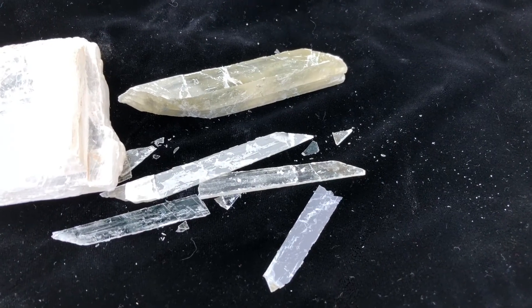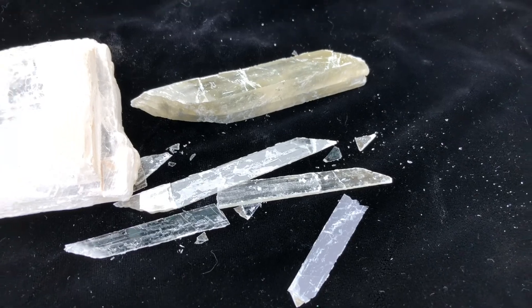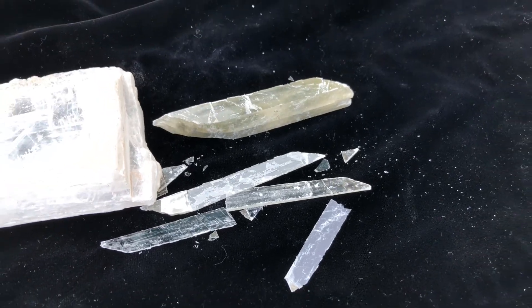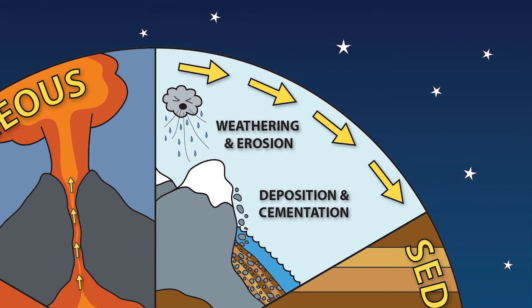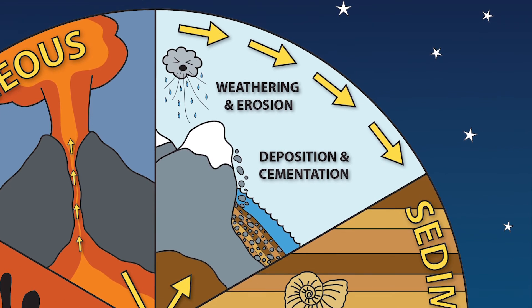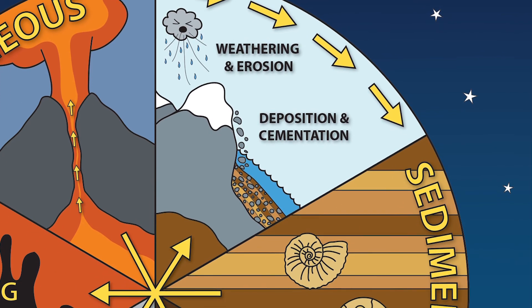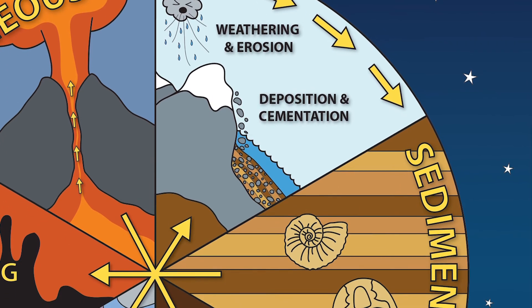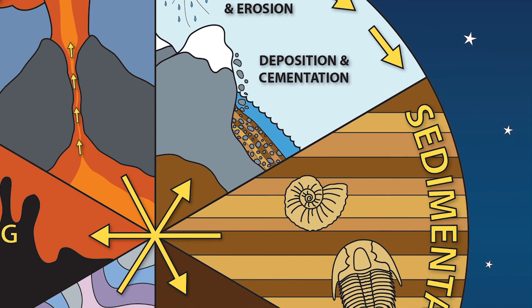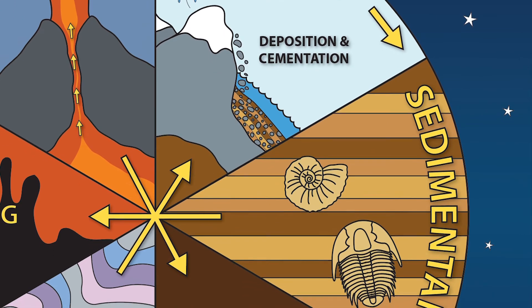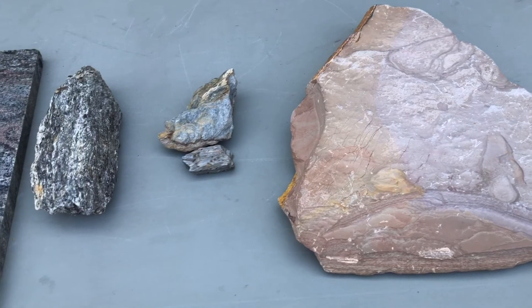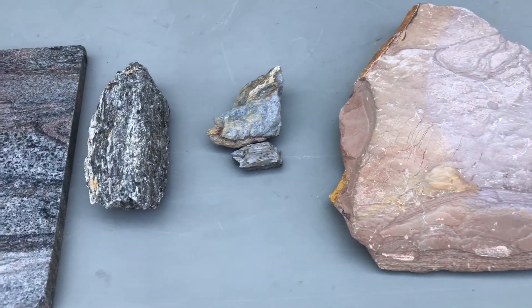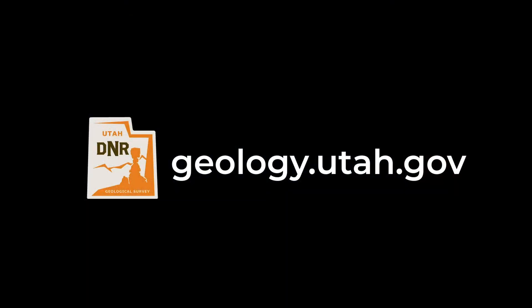Gypsum is another chemical sedimentary rock. To summarize, sedimentary rocks are made of fragments of other rocks, fossils including coral and seashells, or minerals precipitated in drying bodies of water. Want to learn about metamorphic and igneous rocks, and the minerals all rocks are made of? Please watch our other informative videos.